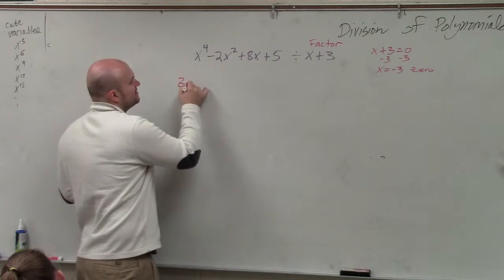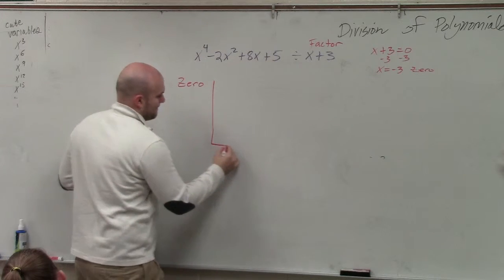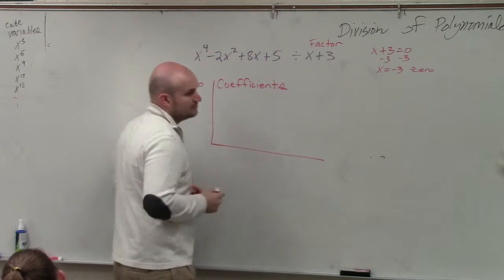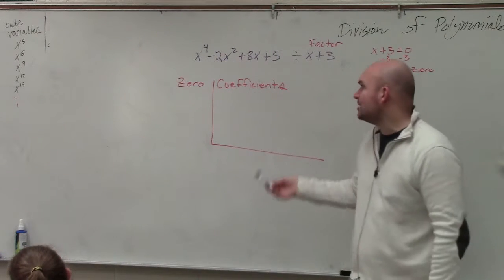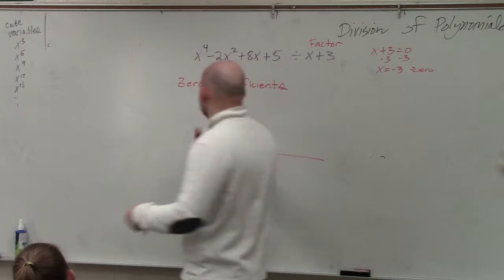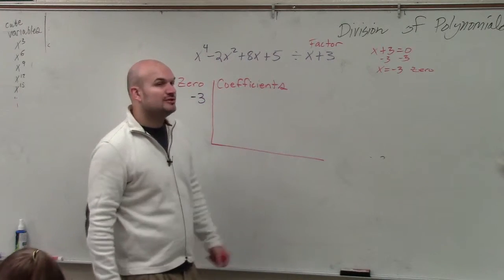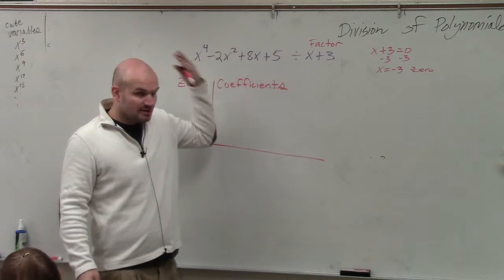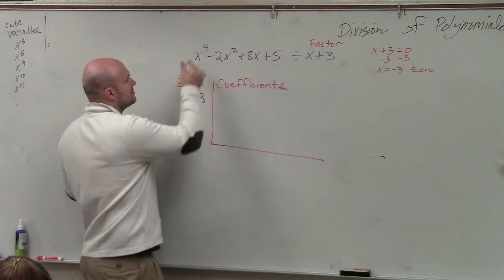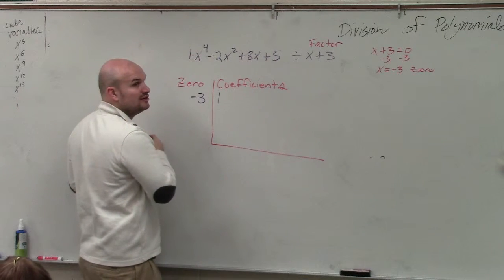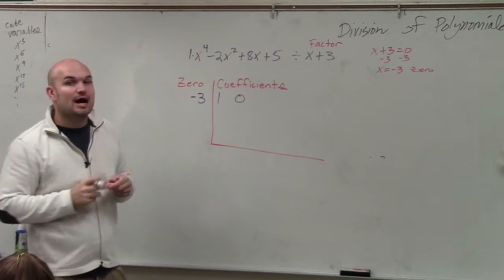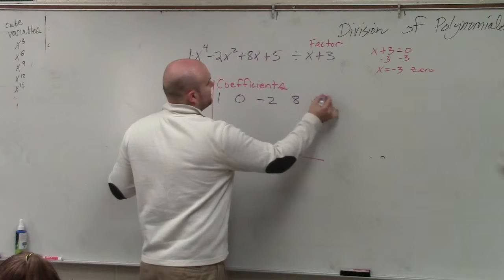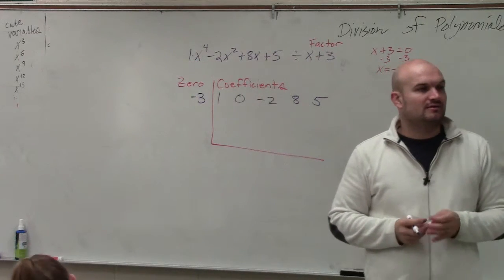When doing synthetic division, you take your zero and then you take the coefficients. What was our zero from our factor? Negative 3 — so you put negative 3 right here. Then you put the coefficients of your dividend in descending order. If it's not in descending order, you won't get the problem right. The first coefficient is 1; I don't have an x cubed term, so you have to include a 0. Make sure you account for every single value in standard form: 1, 0, negative 2, 8, and 5.